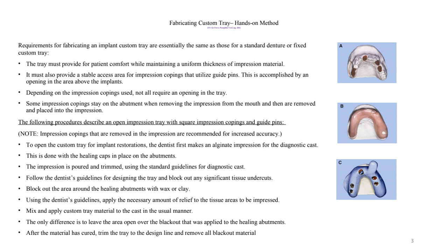Using the dentist's guidelines, apply the necessary amount of release to the tissue area to be impressed. Mix and apply custom tray material to the cast and cure it. The only difference is to leave an open area over the blockout that was applied to the healing abutments. After the material has cured, trim the tray to the design line and remove all the blockout material.